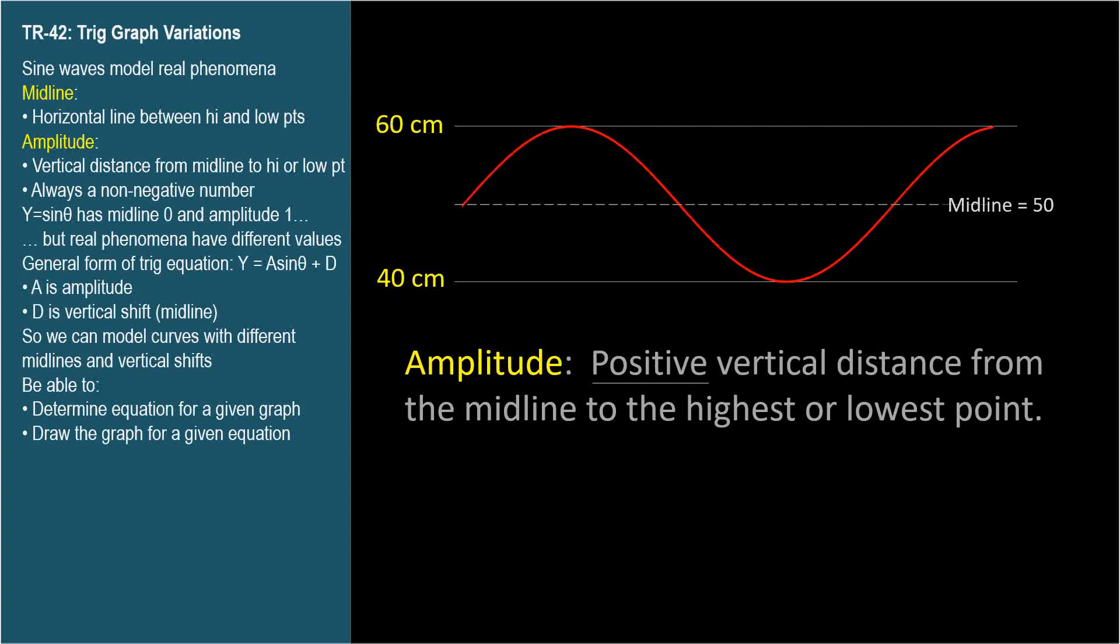For the paint line, the amplitude is 10 since the midline is 50 and the maximum and minimum values are 60 and 40. To account for the amplitude in our model equation, we multiply the trig function term by the amplitude, like this: y equals 10 sine theta plus 50.